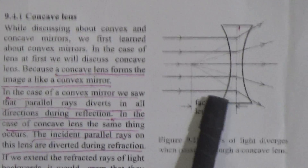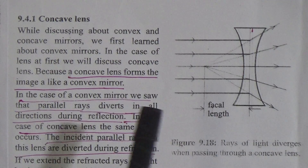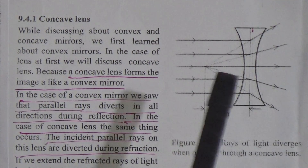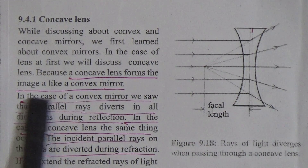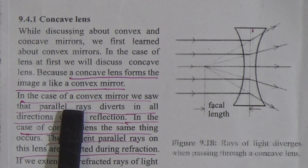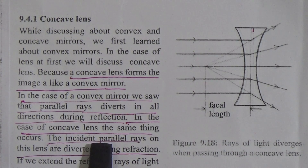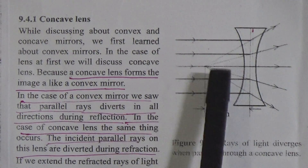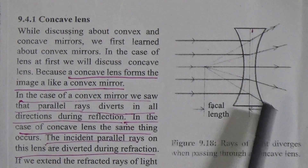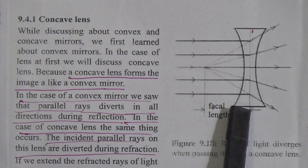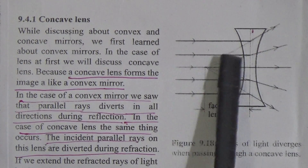While discussing about convex and concave mirror, first we learned about convex mirror. In the case of lens, we will first discuss the concave lens, because concave lens forms the image like a convex mirror. The parallel rays divert in all directions during reflection in a convex mirror, and in the case of concave lens, the same thing occurs — the incident parallel rays are diverted during refraction.